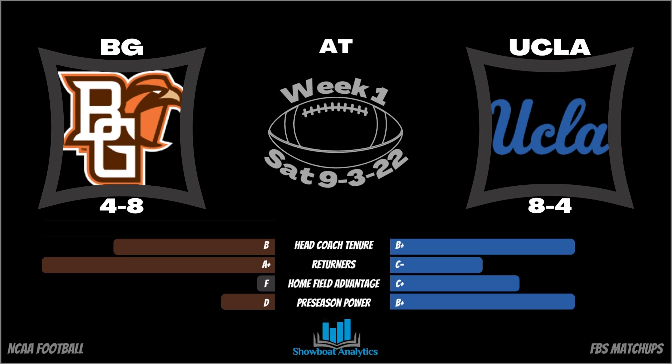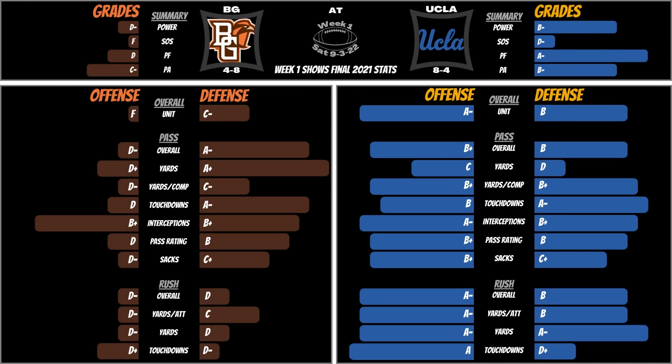Why are only grades displayed and not actual statistics? These short videos are focused on a quick, high-level visual compare of both teams. Here I keep it simple — all FBS statistics are ranked from 1 to 131. I then assign ranks 1 to 13 an A+, ranks 14 to 26 an A, and so on.